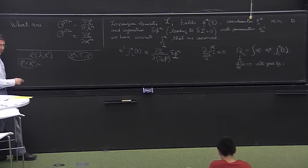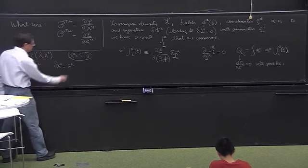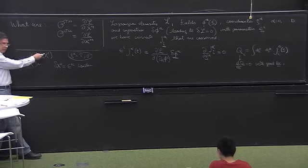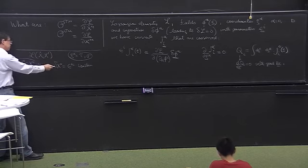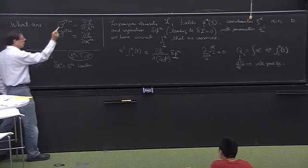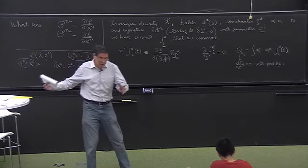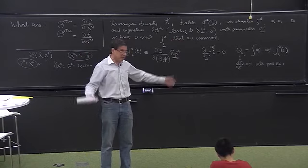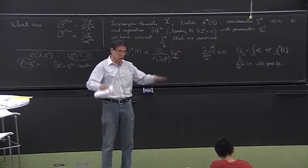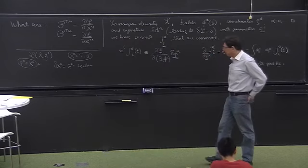The symmetry is δx^μ = constant = ε^μ. Since the Lagrangian just depends on derivatives, if you change x by a constant, x-dot doesn't change, x-prime doesn't change, the Lagrangian doesn't change — you've got a symmetry. This is translational invariance. The dynamics of the string doesn't depend on whether you do it here or in the next room, or today or tomorrow. Translational invariance is part of Poincaré symmetry.